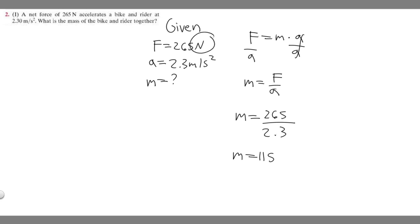And so when we have newtons and meters per second squared, you're going to get that the mass is measured in kg. So it's going to be 115 kg. And so that's going to be your answer. So the mass of the bike and rider together are 115 kilograms.